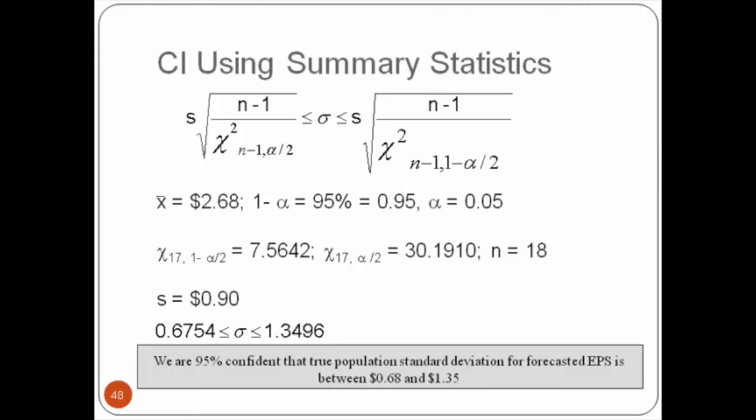The next slide basically gives all these calculations. Whenever we do these calculations which involve a lot of statistical methods, you always write down at the end your conclusion in more plain English language. In this case, we are 95% confident that the true population standard deviation for forecasted EPS is between $0.68 and $1.35.